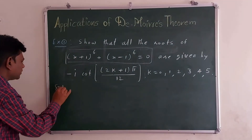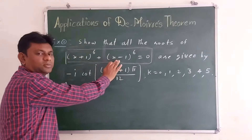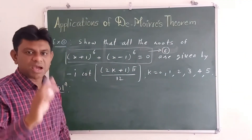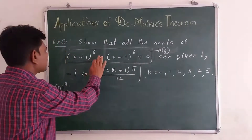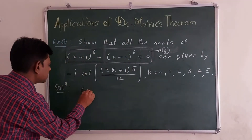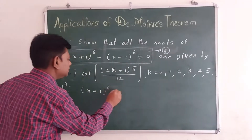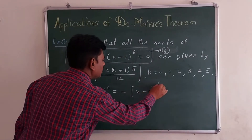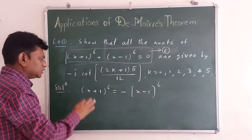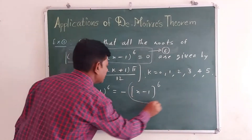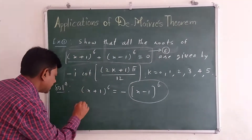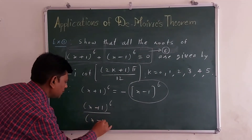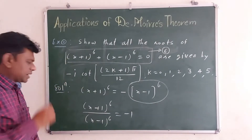Solution of this given equation. The degree of this given equation is 6, and therefore this equation has 6 required roots. We write this equation as (x+1)^6 = -(x-1)^6.